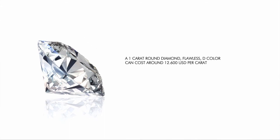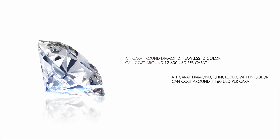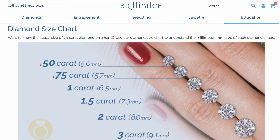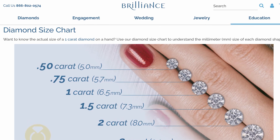A one carat round diamond, flawless, D-color, can cost around $12,600 USD per carat, while a pretty included one carat diamond with N-color can cost around $1,160 USD per carat. These prices are based on a market average prepared by PriceScope.com in May 2020 for round brilliant cut diamonds. The size of a one carat round brilliant cut diamond is around 6.5mm in diameter. At brilliance.com you can find a helpful diamond sizing chart.